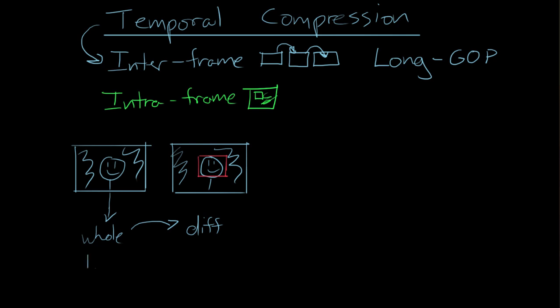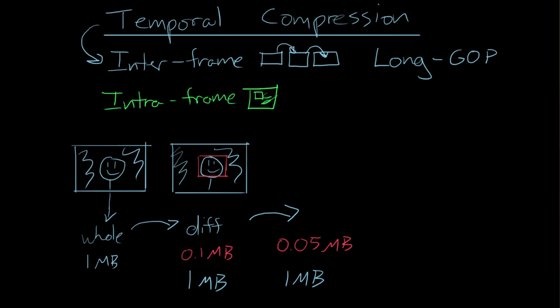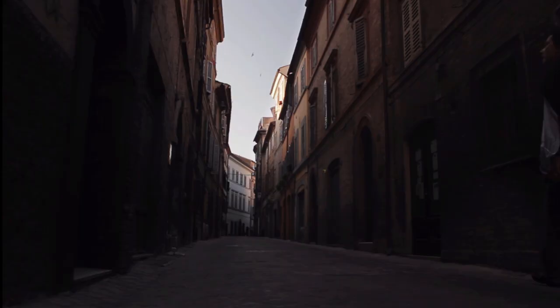So if that full frame took one megabyte, the difference frame might only be 0.1 megabytes. You keep repeating this — the next difference might be 0.05 megabytes if the expression barely changed. You can see how this makes a huge difference in codec efficiency. If you had a codec that wasn't doing interframe compression, you'd have to store one megabyte every single frame. This can save tons of space. The talking head is the most obvious example, but a large part of many shots stays the same from frame to frame in everyday video work.